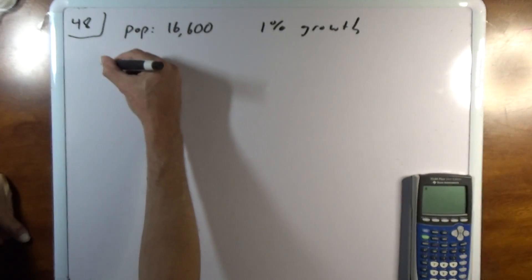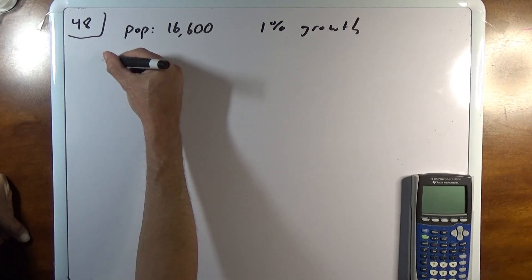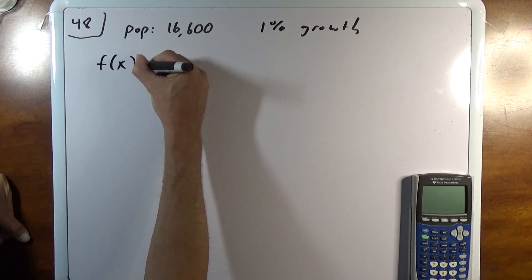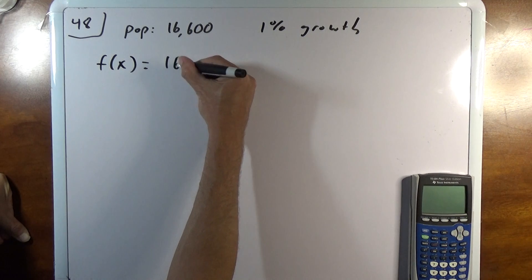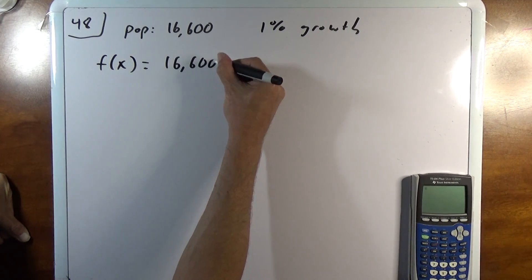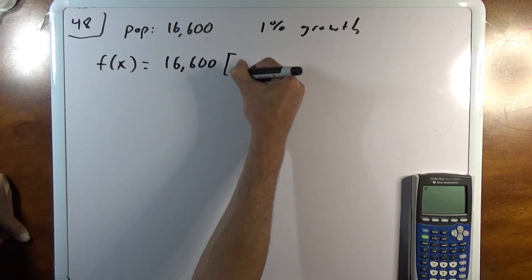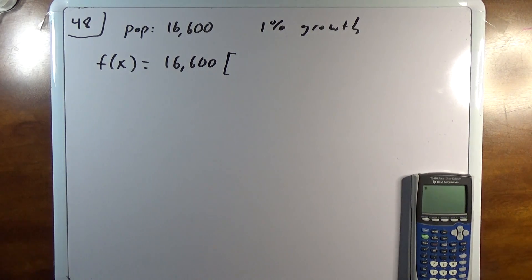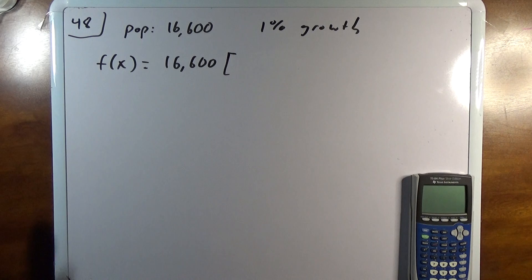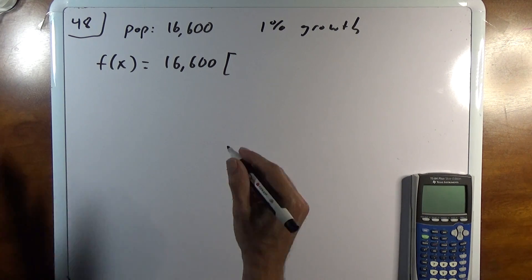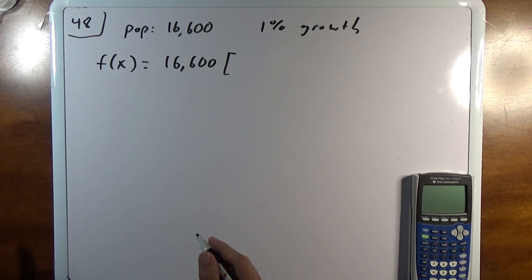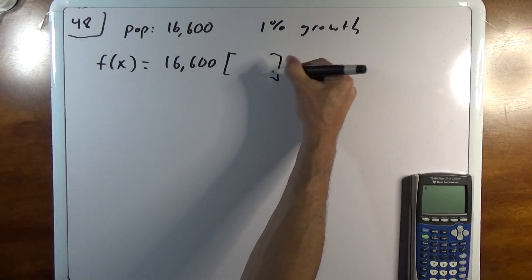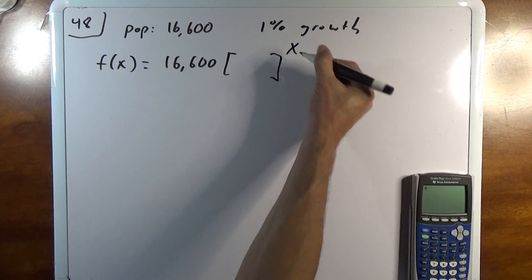It wants us to write an equation to model the population growth. So I guess a function we'll name it, F of X. So I take 16,600. So how do we represent a growth of 1%? Well, if I want it growing, it's got to be over 1, right? If we're going to have a number here raised to X.